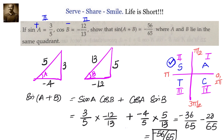We have been given sin(A) = 3/5 and cos(B) = -12/13. Since A and B are in the same quadrant, and sine is positive while cosine is negative, both must be in the second quadrant. Therefore cos(A) = -4/5 and sin(B) = 5/13. Substituting these values, we get sin(A+B) = -56/65.